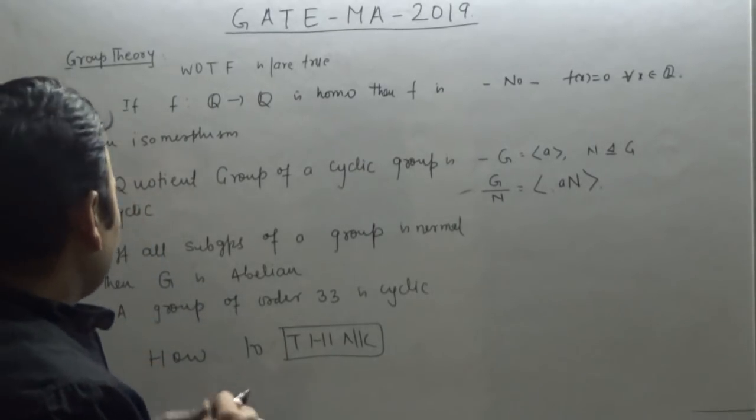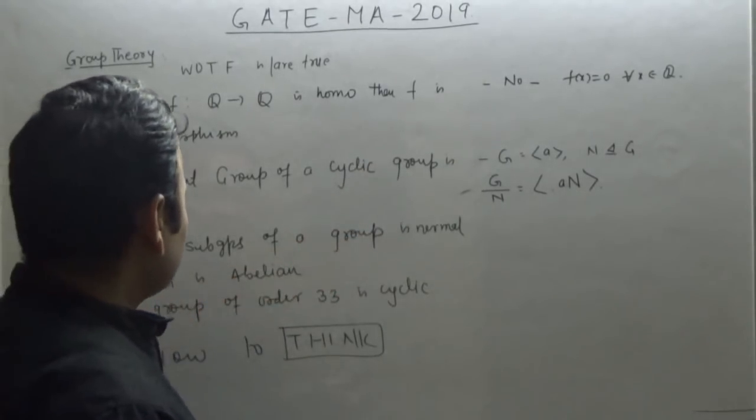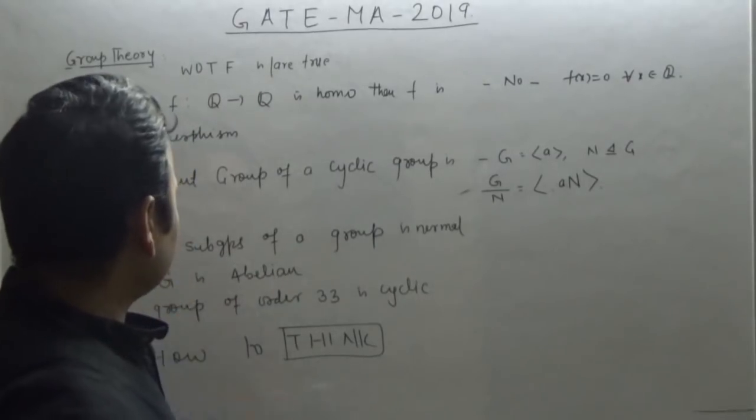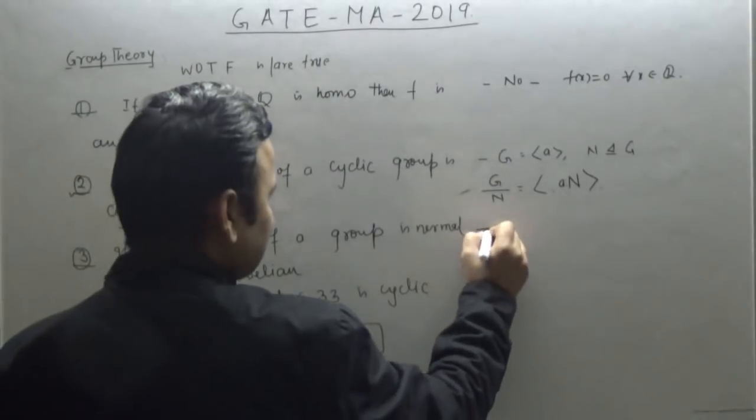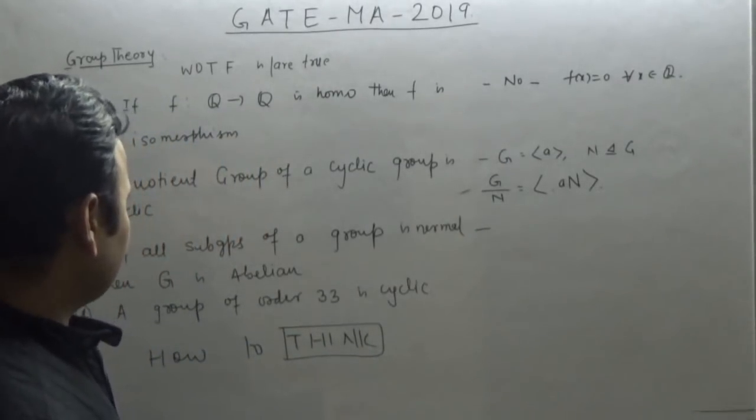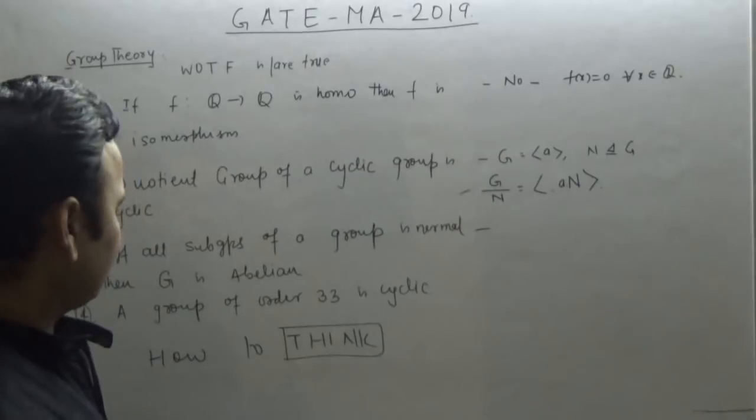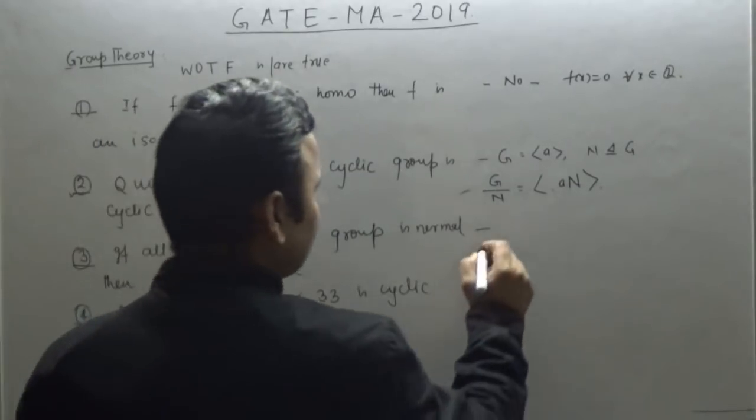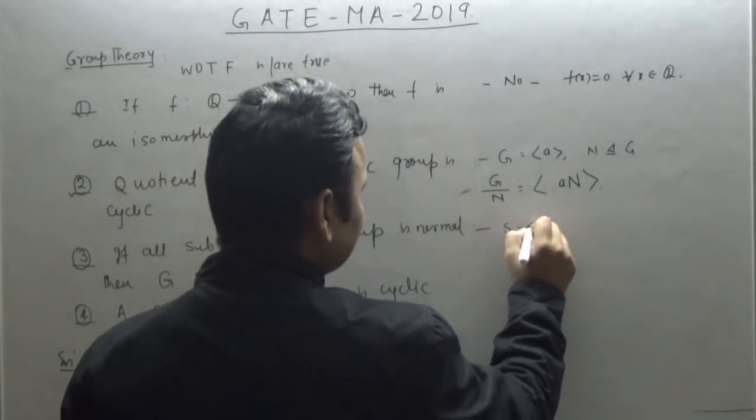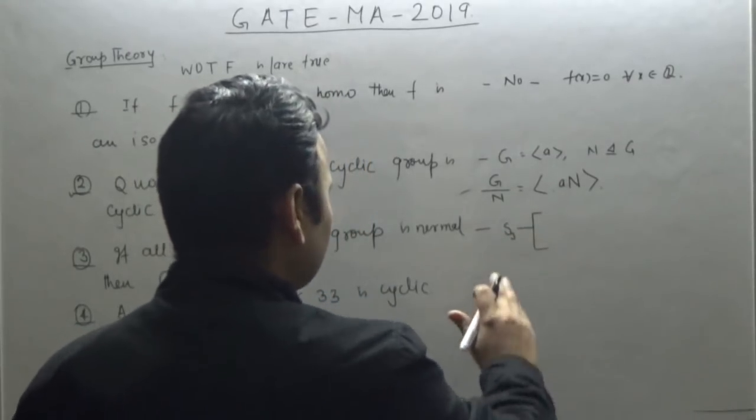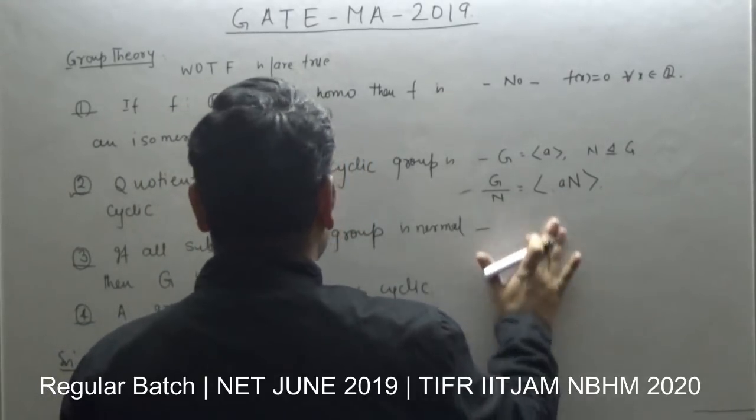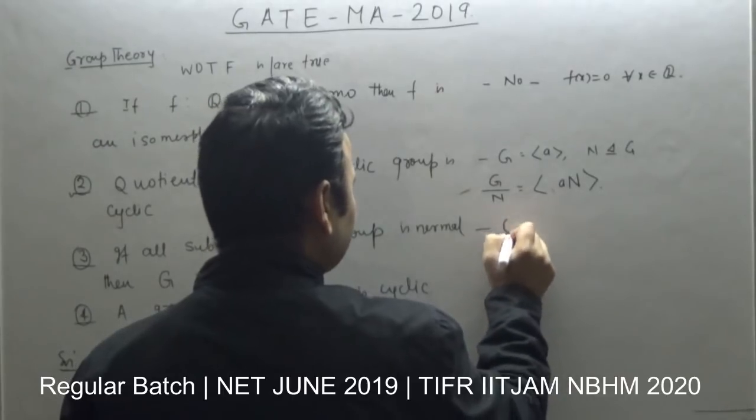If all subgroups of a group are normal, then G is abelian. Is this statement correct? If all subgroups are normal, is the group abelian? No, look at Q8.